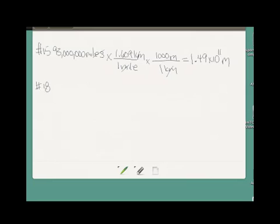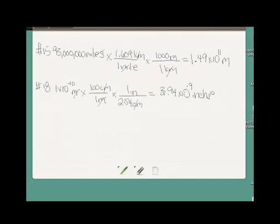All right, number 18 is a neat little problem. It tells us that the diameter of a typical atom is 1 times 10 to the negative 10th meters, and it wants to know how many inches that would be. Well, I looked inside the front cover of Giancolli, and there wasn't a straight meters to inches conversion. So I do know that there are 100 centimeters in every meter. And Giancolli did tell me that there are 2.54 centimeters in one inch.